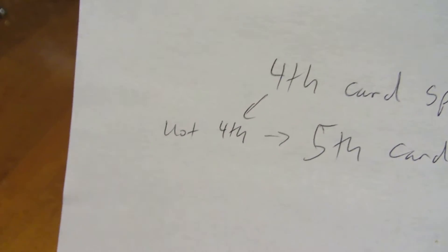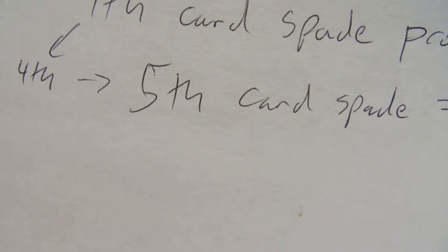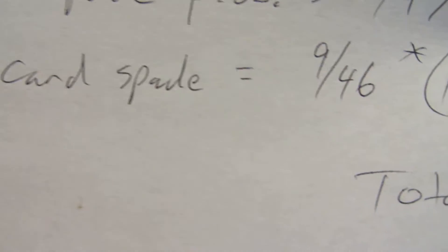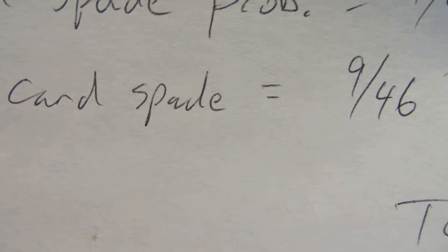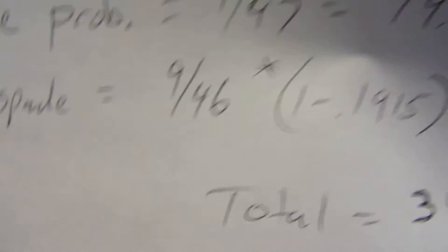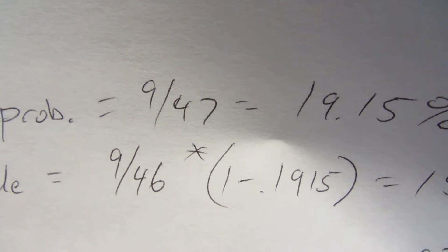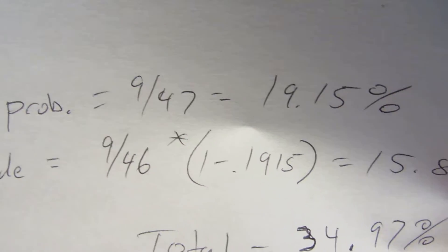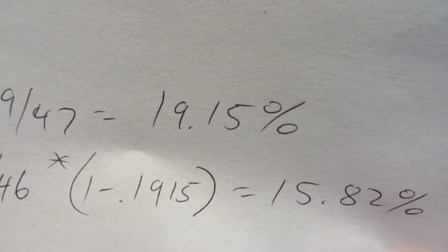But if we miss the 4th, we could still hit a Spade on the 5th. And so that's this. So if we miss the 4th, there's still 9 Spades left. Now there's only 46 total. So the probability of hitting the Spade on this turn times the probability of missing on the first turn. Which is 1 minus the probability of the first turn. And so that will happen about 15.82% of the time.